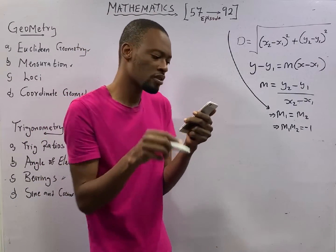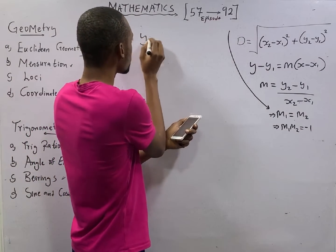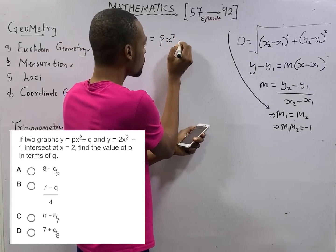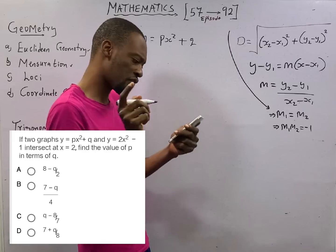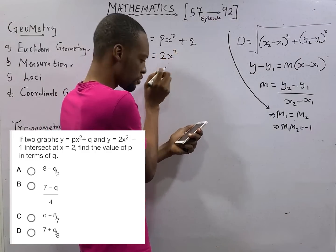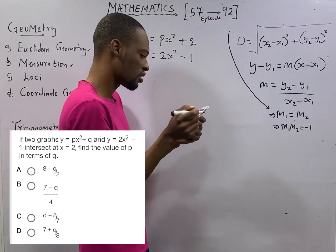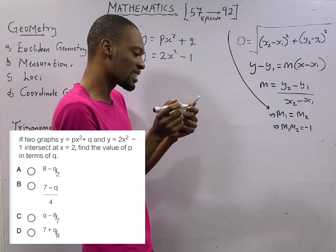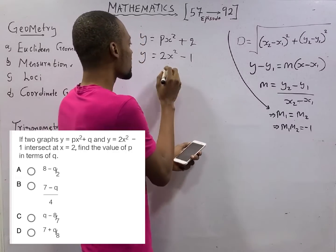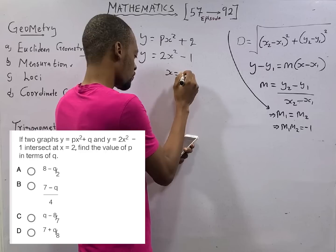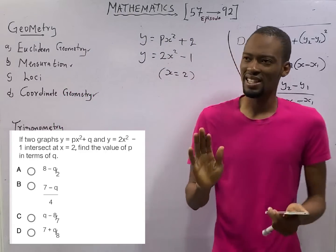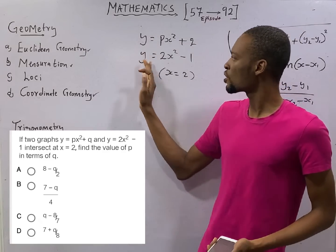It says if two graphs, the first graph is y equals px squared plus q, and the second graph y equals 2x squared minus 1. If they intersect, find the value of p in terms of q. They intersected at x equals minus 2. If you are told that two lines intersect, it means this equals this.